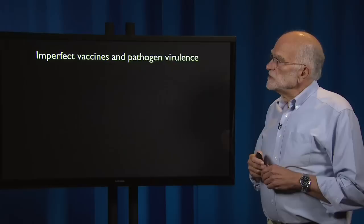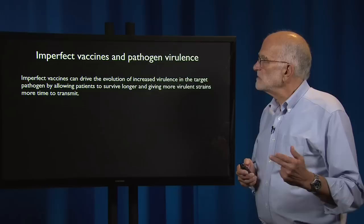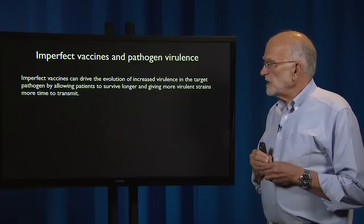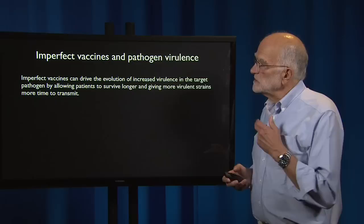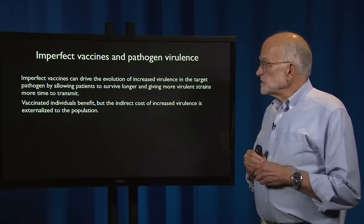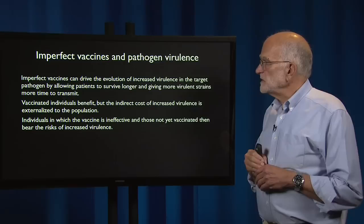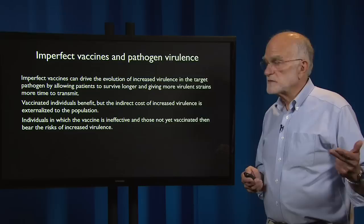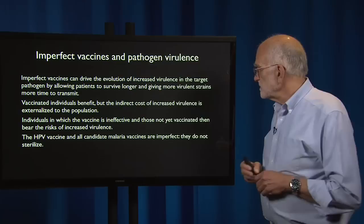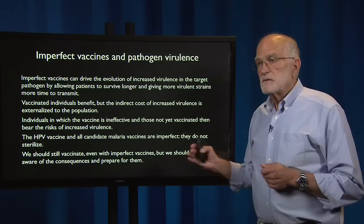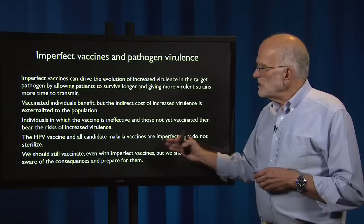Another issue that arises is that of imperfect vaccines and pathogen virulence. Imperfect vaccines can drive the evolution of increased virulence in the target pathogen by allowing patients to survive longer and by giving more virulent strains more time to transmit. This has been confirmed in mice and in chickens. Vaccinated individuals benefit, but the indirect cost of increased virulence is externalized to the whole population. Individuals in which the vaccine is ineffective and those who have not yet been vaccinated are then exposed to pathogens that have higher virulence. The HPV vaccine and all candidate malaria vaccines are imperfect — they do not sterilize. We should still vaccinate; there's no question about that, even with imperfect vaccines, because many, many lives will be saved. But we should also be aware of the consequences and prepare for them.